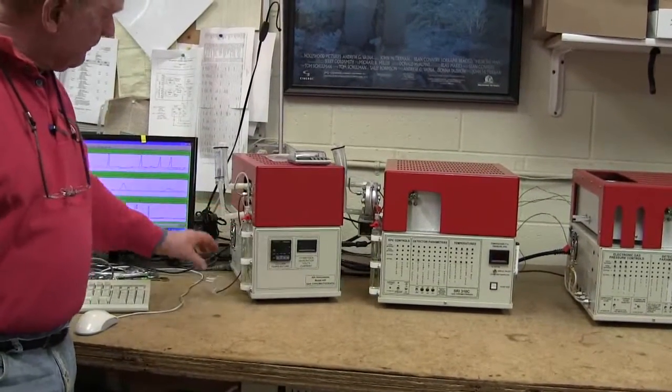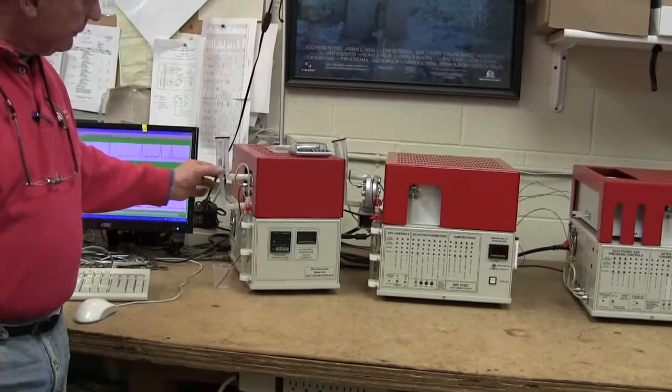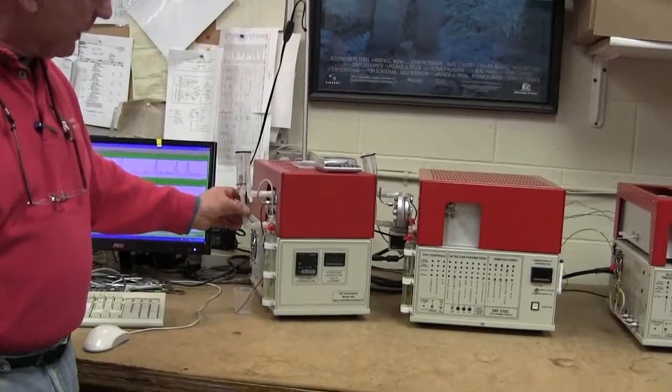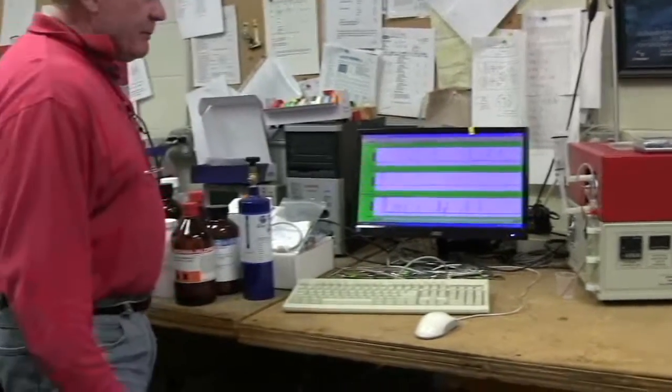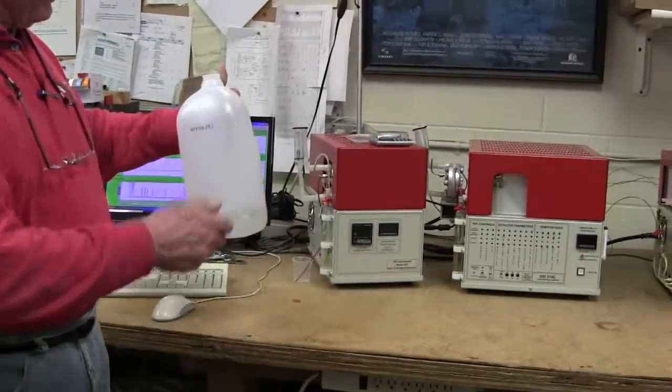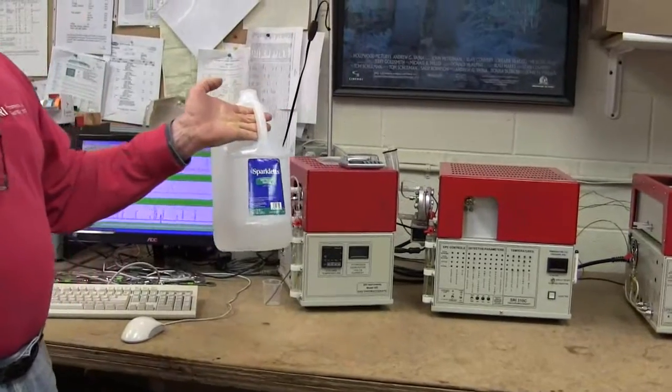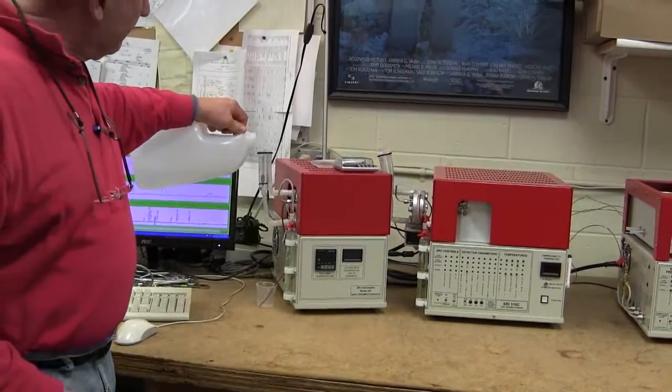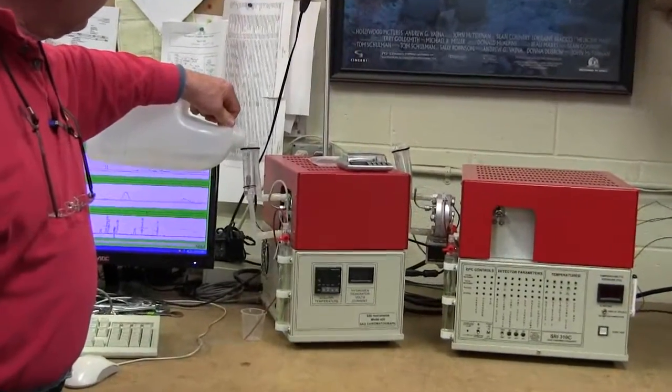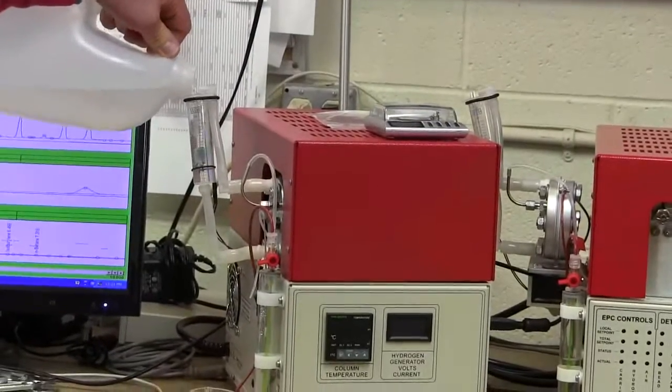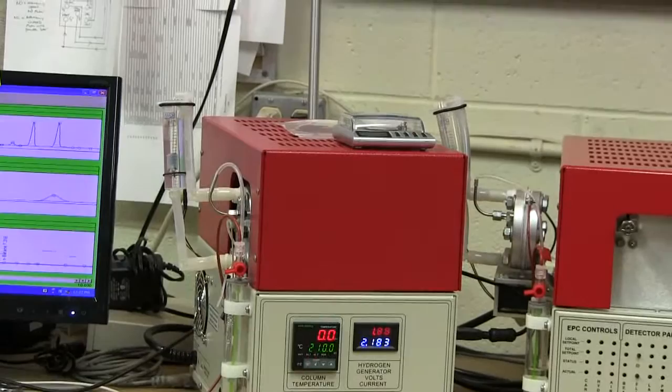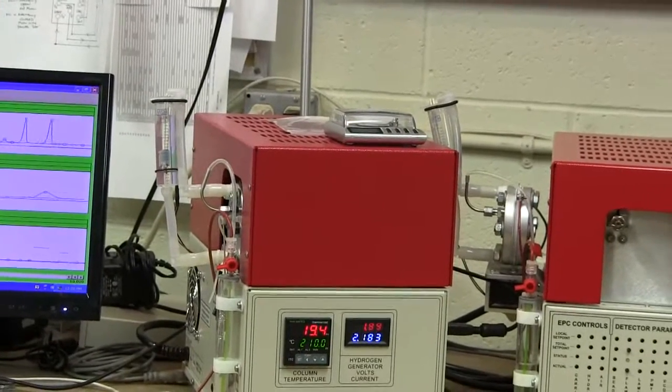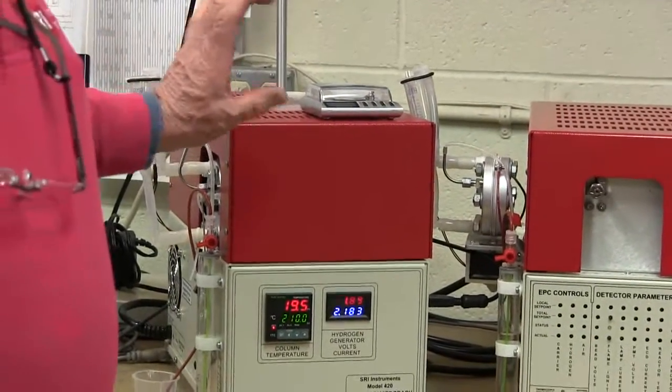The nice thing about the Model 420 is that it includes a built-in hydrogen generator, which is this little apparatus here on the side. The hydrogen generator allows you to make hydrogen from just distilled water that you buy at the grocery store. You pour the water into the hydrogen generator, and when you turn on the GC, it makes enough hydrogen to run for all day on just that little bit of water.